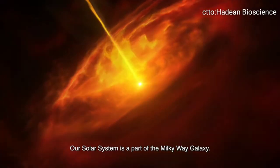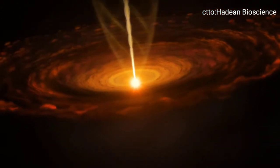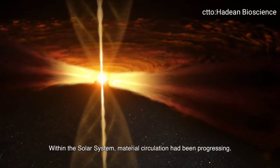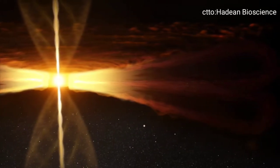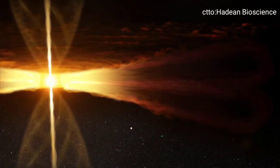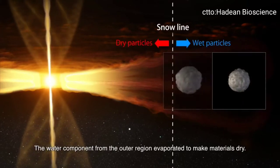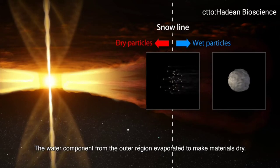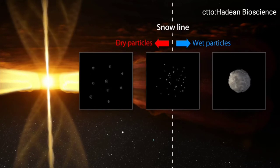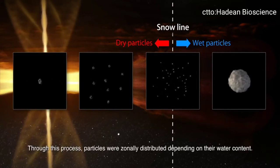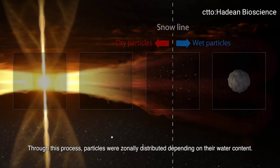Our solar system is a part of the Milky Way galaxy. Within the solar system, material circulation had been progressing. The water component from the outer region evaporated to make materials dry. Through this process, particles were zonally distributed, depending on their water content.